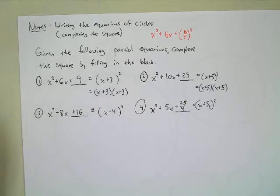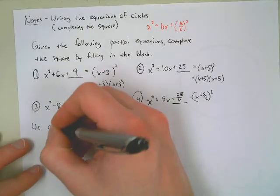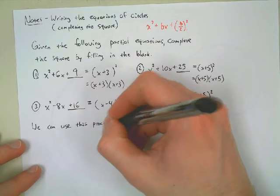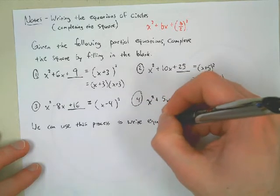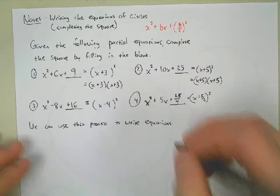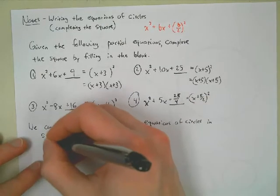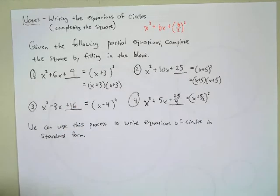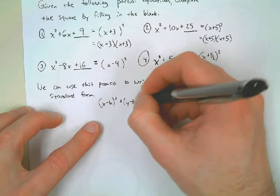That's the skill we're going to use to write the equation of circles in standard form. Standard form is x minus h, quantity squared, plus y minus k, quantity squared, equals the radius squared.